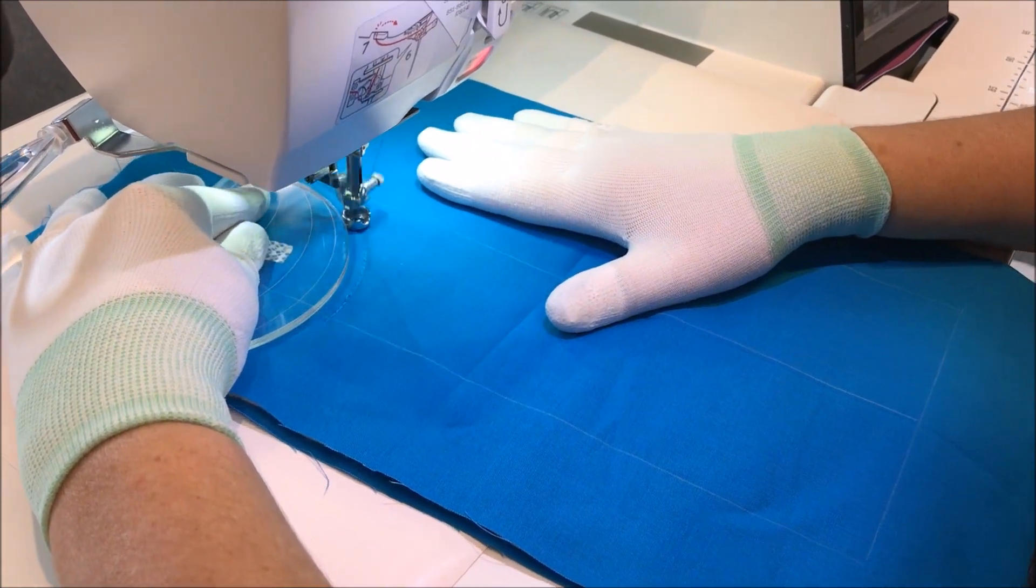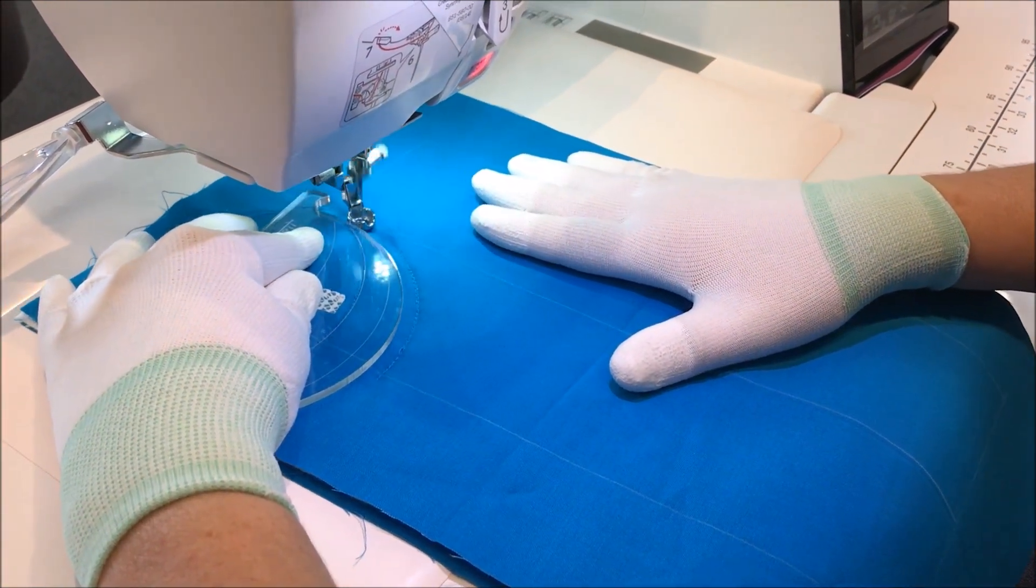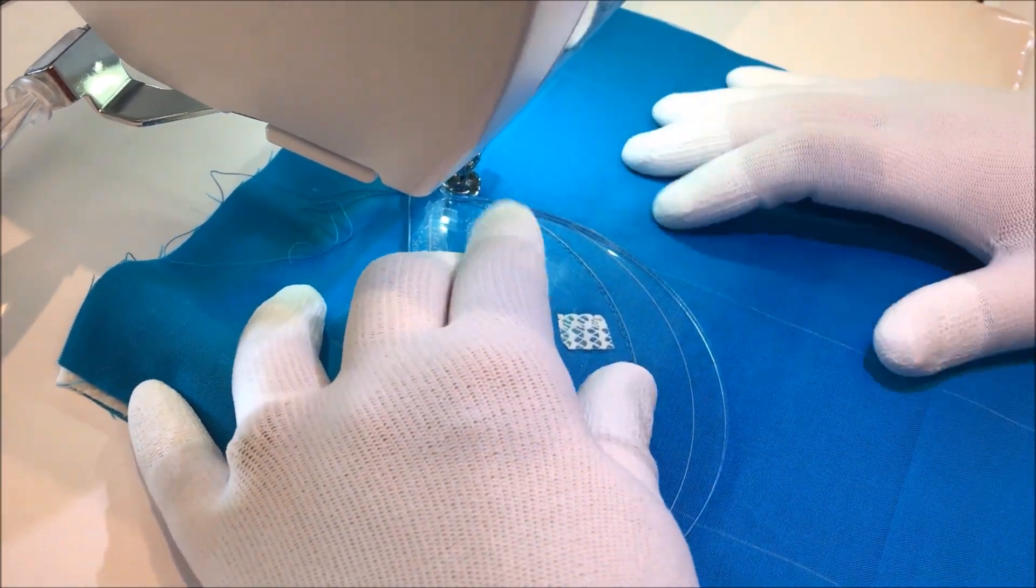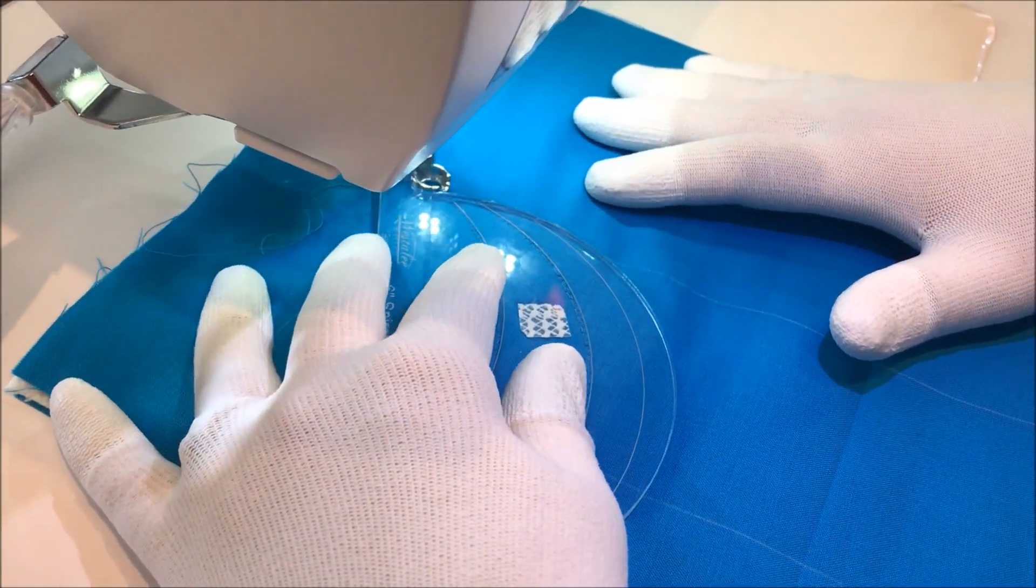The pattern is that simple. Sew down, sew backwards, move the ruler down. Sew down, sew backwards, and move the ruler down.